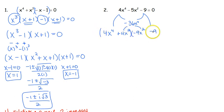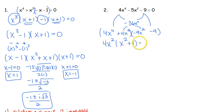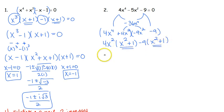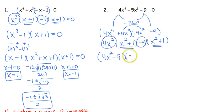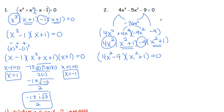Then we do it the same way: factor by grouping. We pull out our 4x squared, we're left with x squared plus 1. Pull out our negative 9, we're left with x squared plus 1. And again, our middle terms are the same, so we're good there. Our first factor — we combine the two GCFs together to get 4x squared minus 9. Bring our second factor down. And remember, set equal to 0, because we're solving — we know we always have an equals 0 sign.